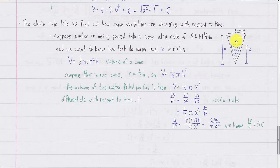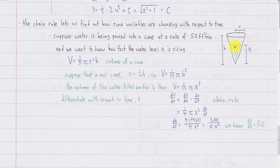The first thing you have to do in these problems is find some equation that relates your variables. In our case, we have a cone, and we know the volume of any cone is one-third pi r squared times the height. Notice we have two cones that this formula applies to: the container itself, which is a cone, and the cone of water inside the container, which is increasing in height.